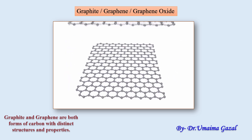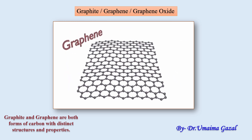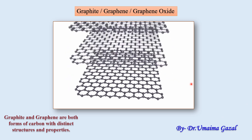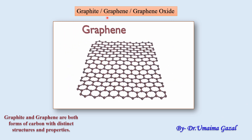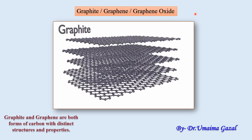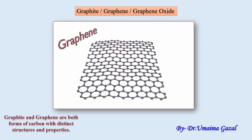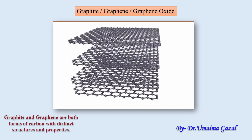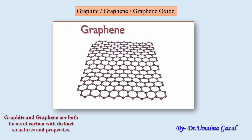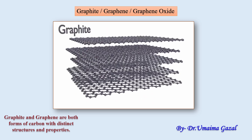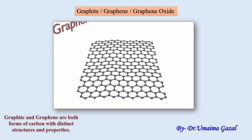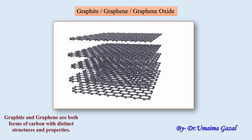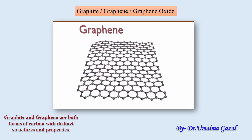Good morning everyone. This is Dr. Mamagazil and today in this video we will talk about the three different members of the same family which are graphite, graphene and graphene oxide. Graphite and graphene are both said to be the forms of carbon with distinct structures and properties, and graphene oxide is known as the oxidized form of graphene which has recently gained a lot of attention as a platform for tissue engineering applications.